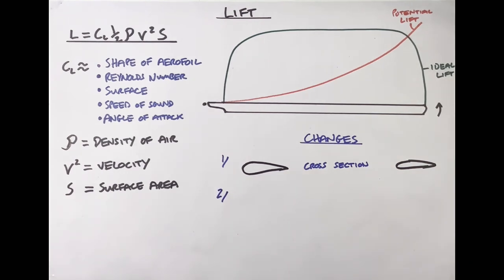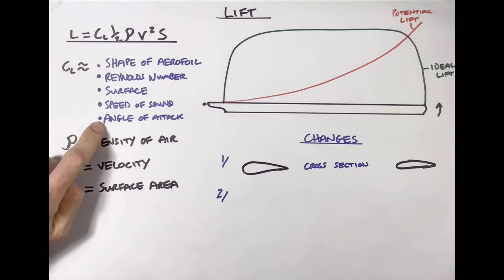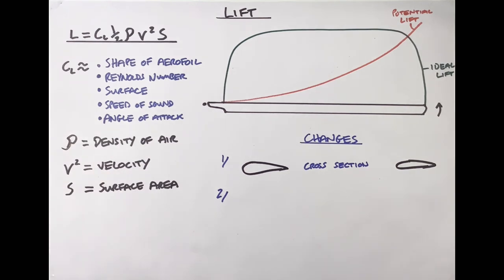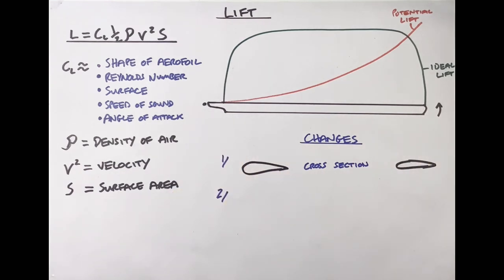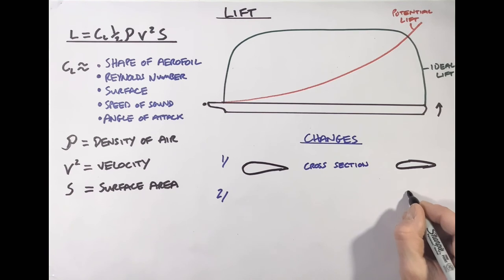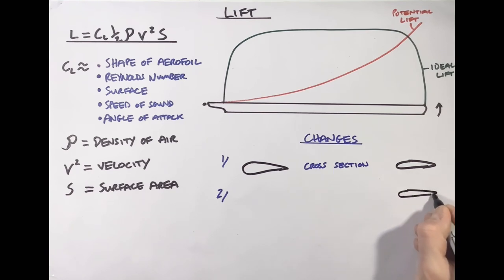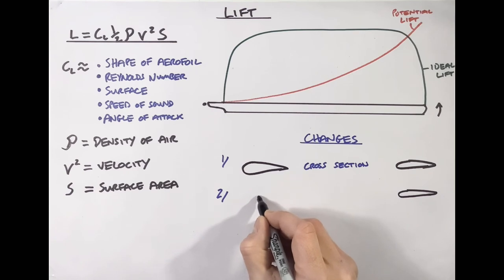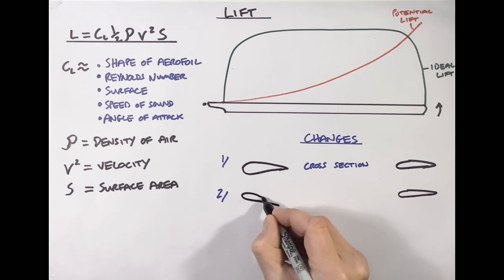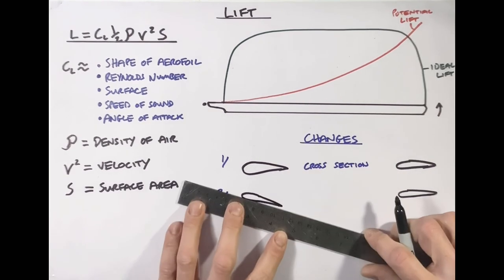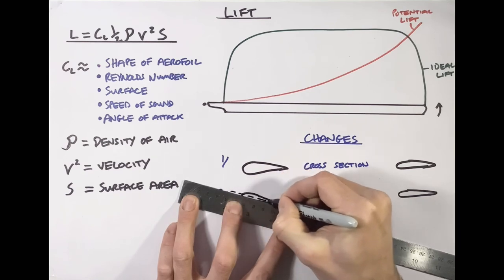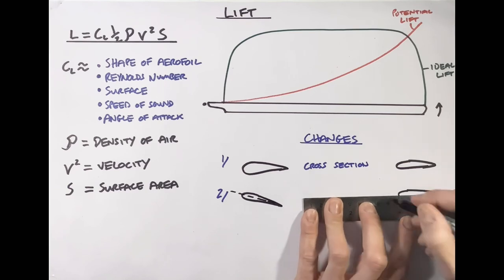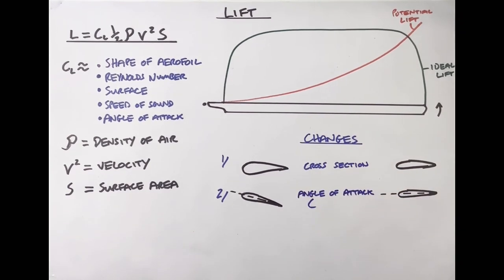The next method is angle of attack. We can change the angle of attack using the collective, but we can also make it different at the tip versus the root by physically twisting the blade. At the tip you can have an almost feathered blade — near zero pitch — while at the root, with the collective at zero pitch, you might have a couple of degrees of angle of attack. This is known as washout.